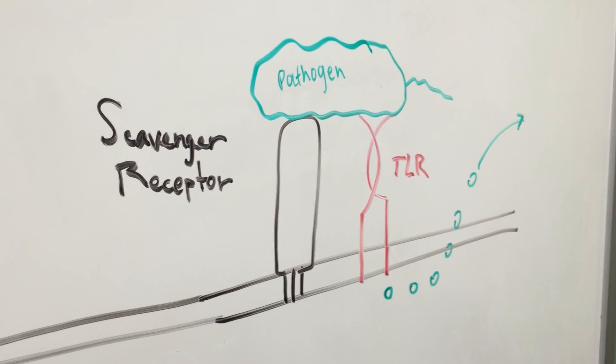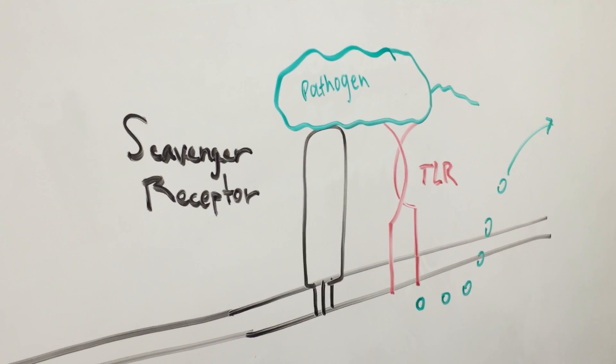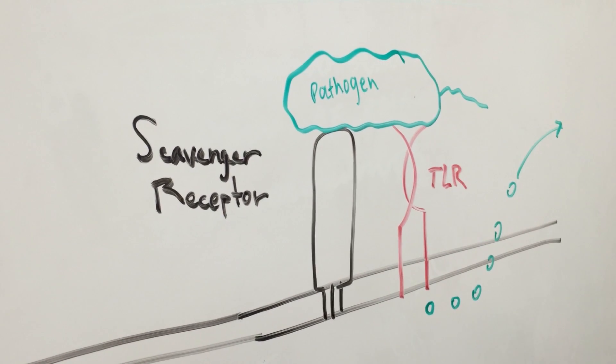The scavenger receptor works with the toll-like receptor, or TLR, shown in red, binding the pathogen and the two receptors at the same time.